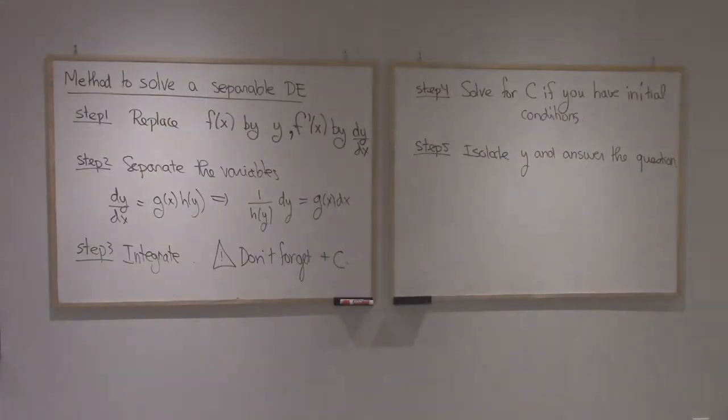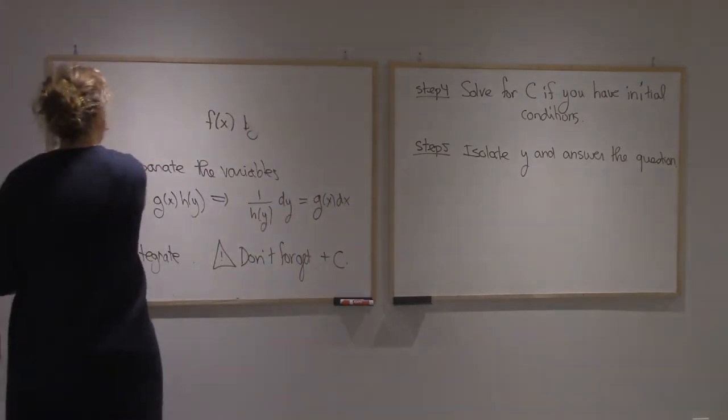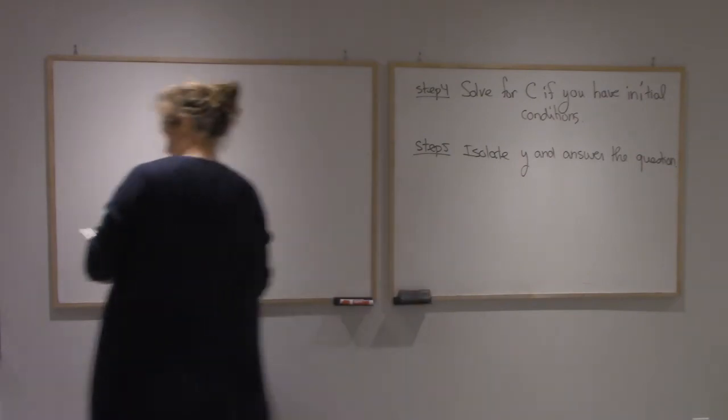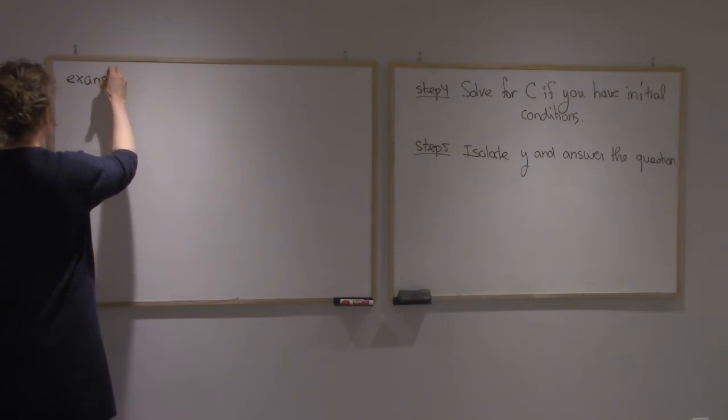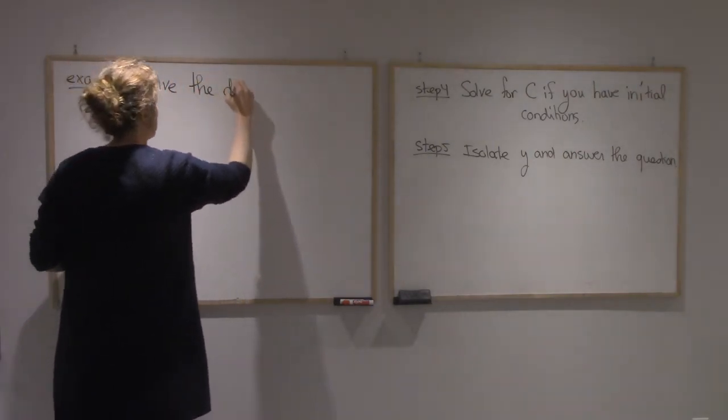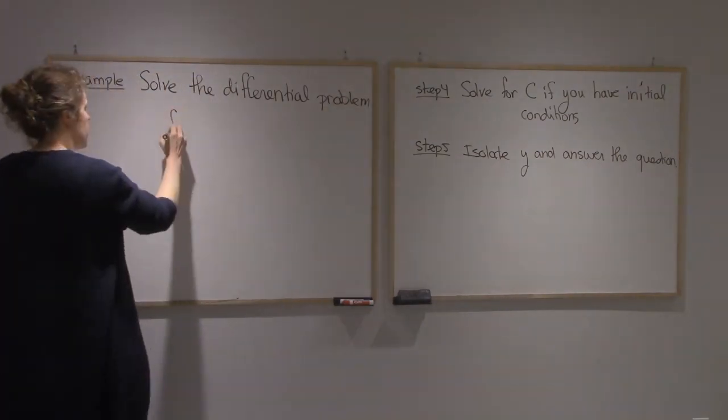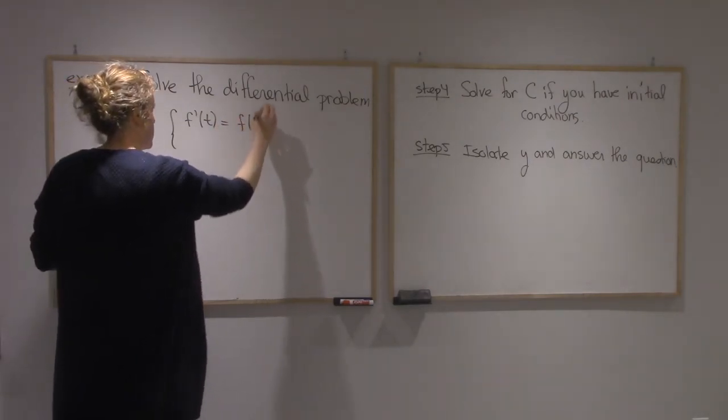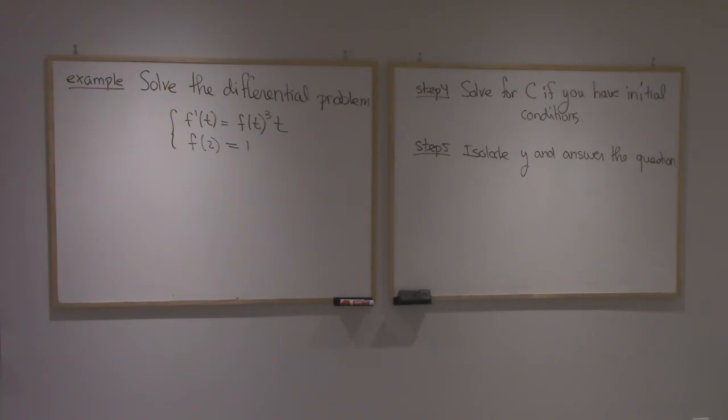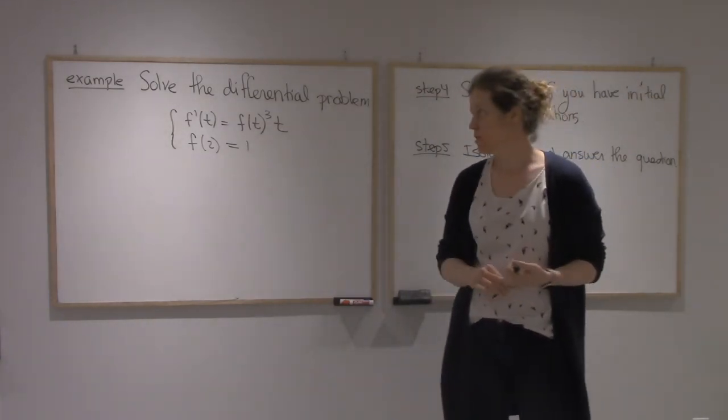Alright, so let's do a problem. I'm given this differential problem: I have f prime of t equals f of t cubed times t with f of 2 equals 1. The fact that I have f of 2 equals 1 means that you'll probably need to solve for C and you'll find a particular solution. Alright, so let's start.